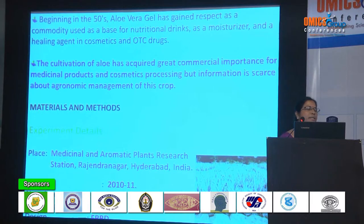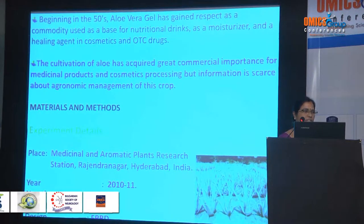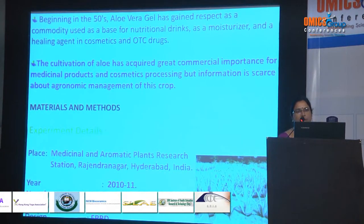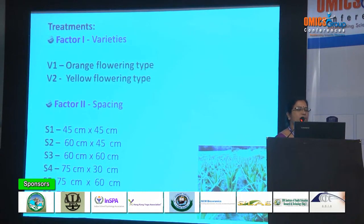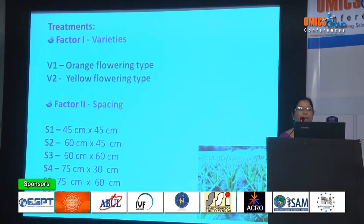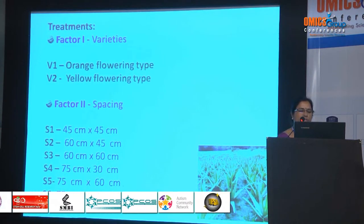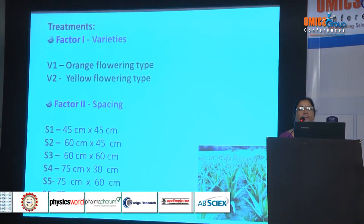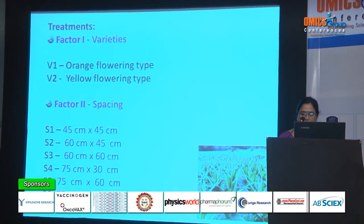The experiment was conducted during the year 2010-11 at our research station — the Medicinal and Aromatic Plants Research Station, Hyderabad. I have taken 12 treatments with 3 replications, conducted in a Randomized Block Design. Two factors were studied: two different varieties of aloe vera — orange flowering type and yellow flowering type — and six spacings: 45×45 cm, 60×45 cm, 60×60 cm, 75×30 cm, 75×60 cm, and 75×75 cm.